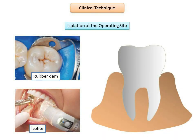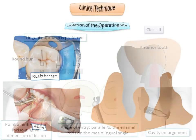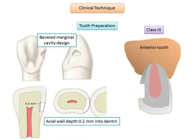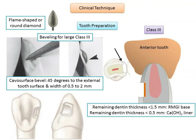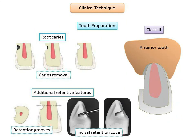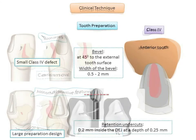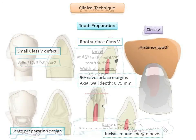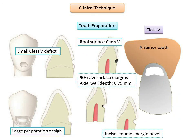With this we are done with cavity preparation for anterior teeth involving class 3, class 4, and class 5 caries. In the next presentation we shall discuss cavity preparation for posterior teeth and the restorative part of composite resins. Please like, share, comment, and subscribe to the channel.